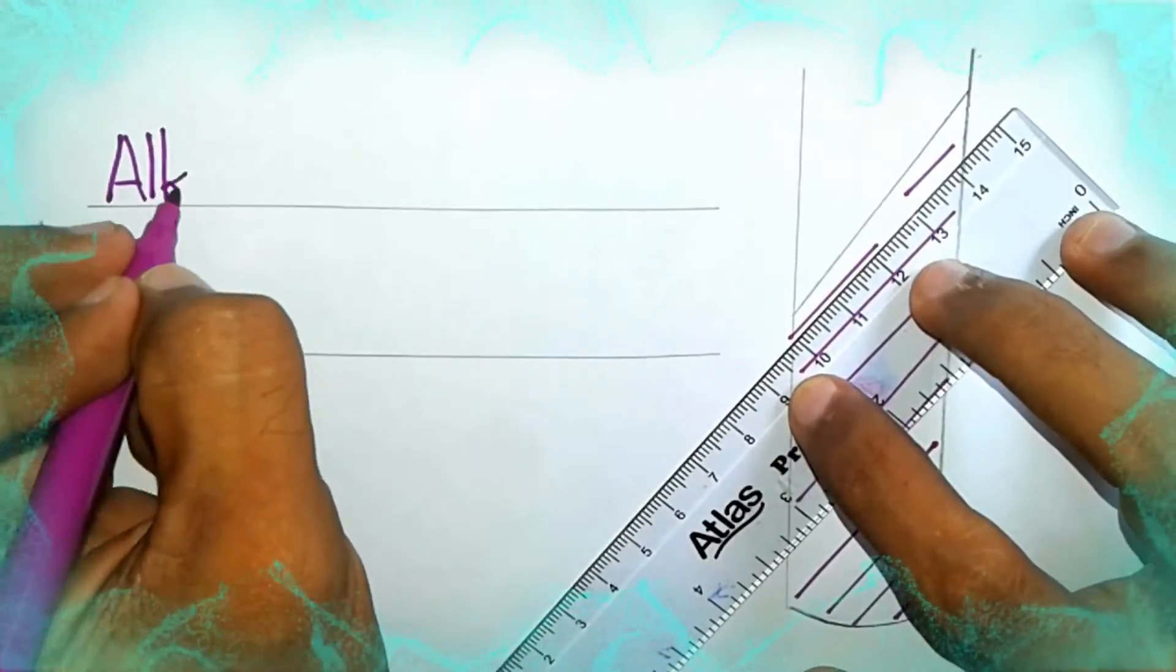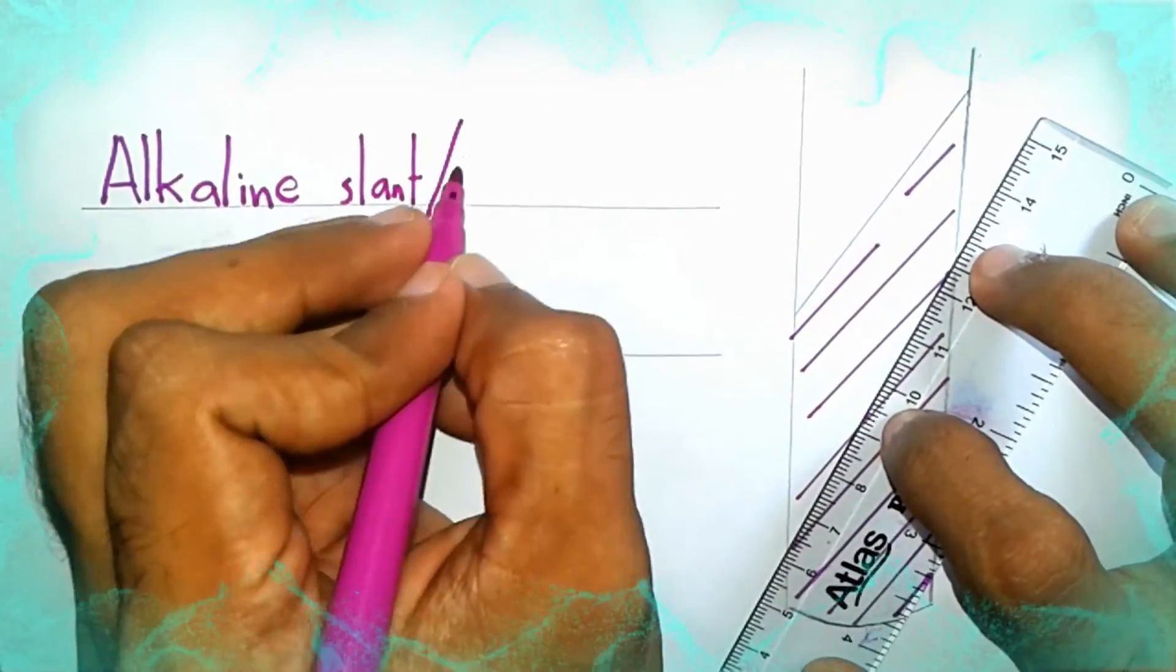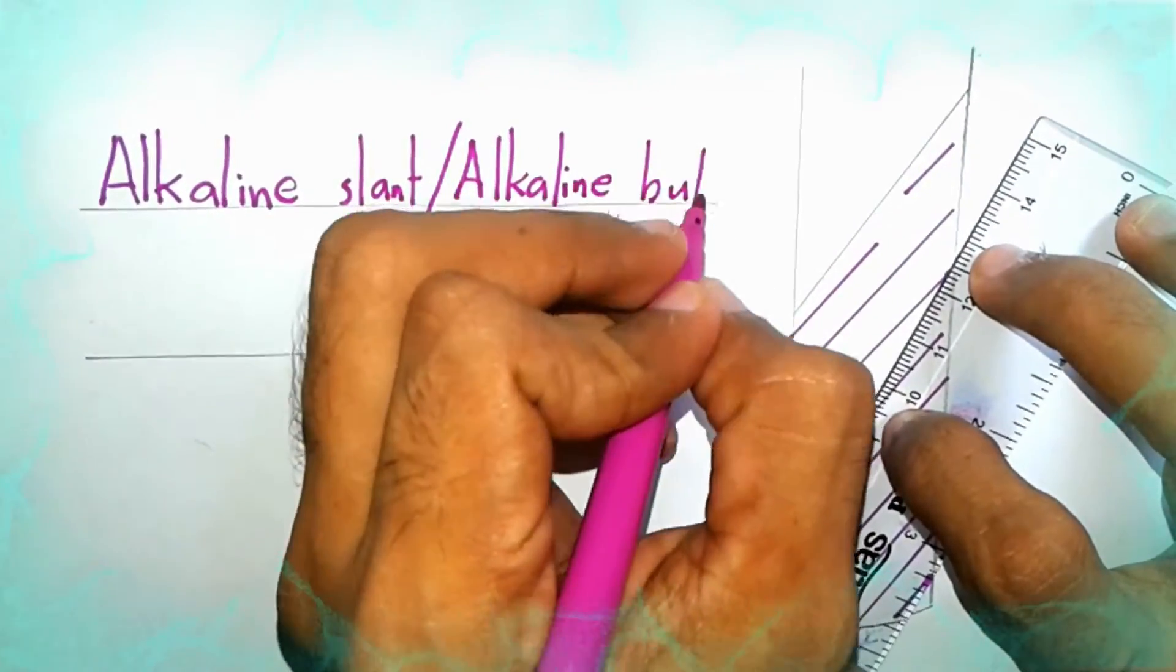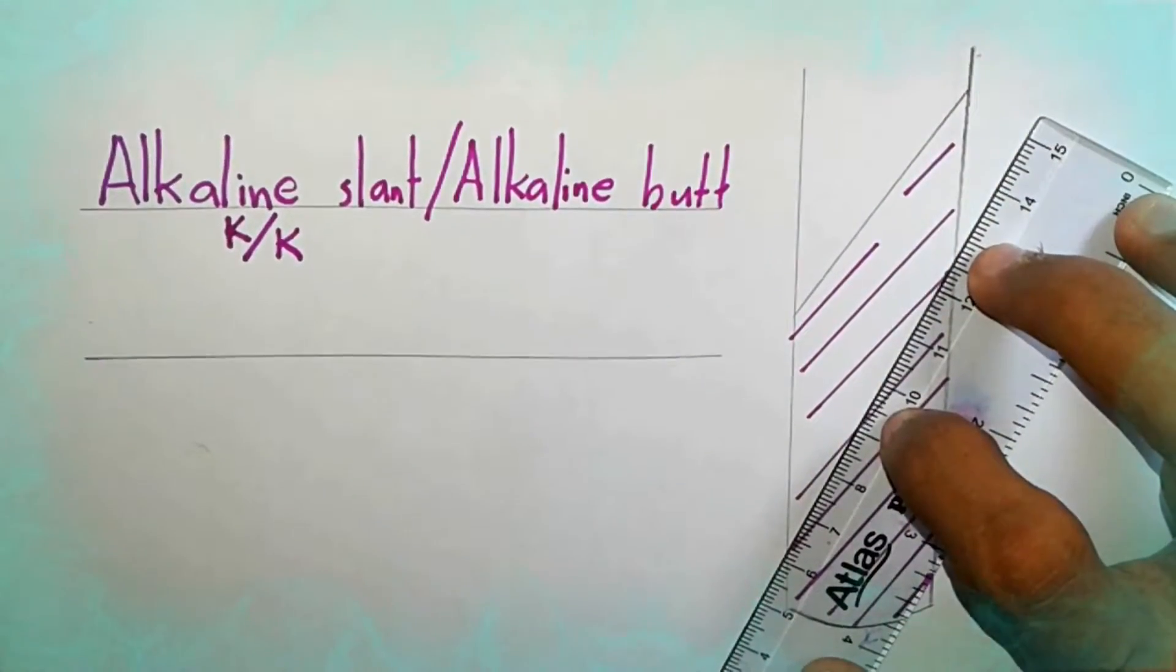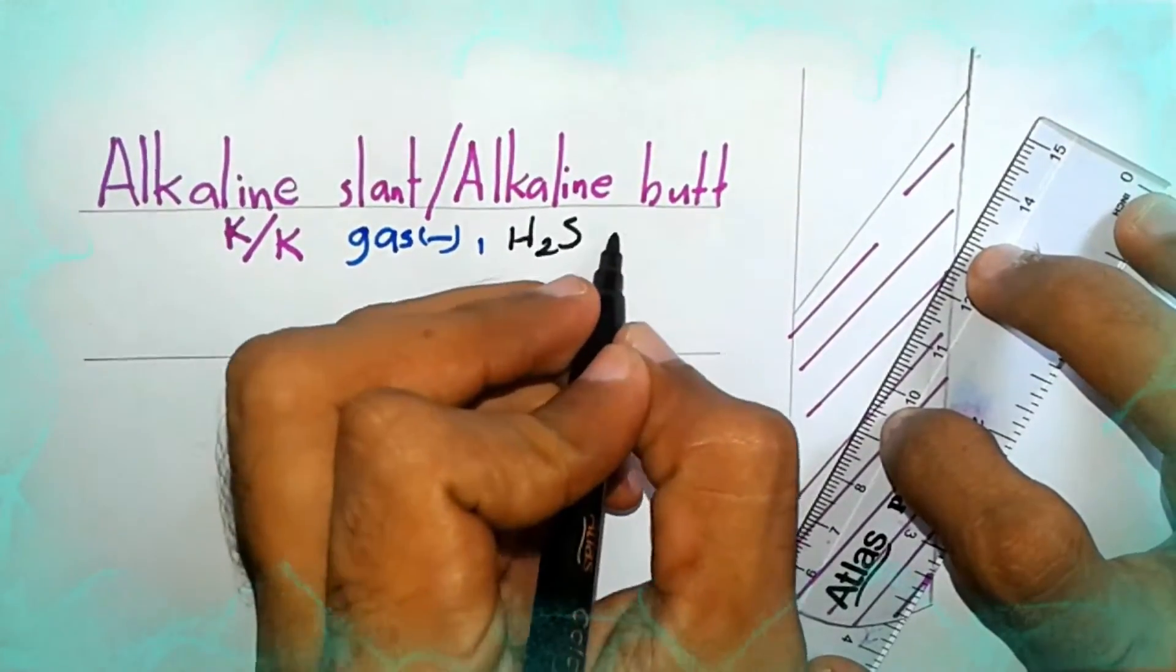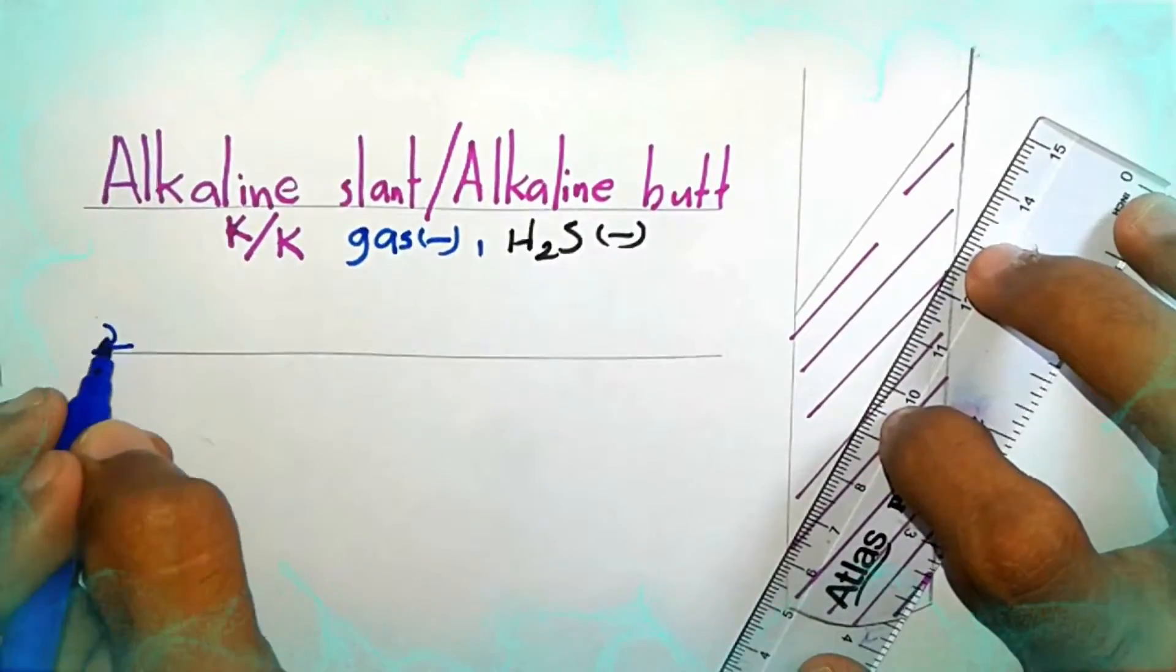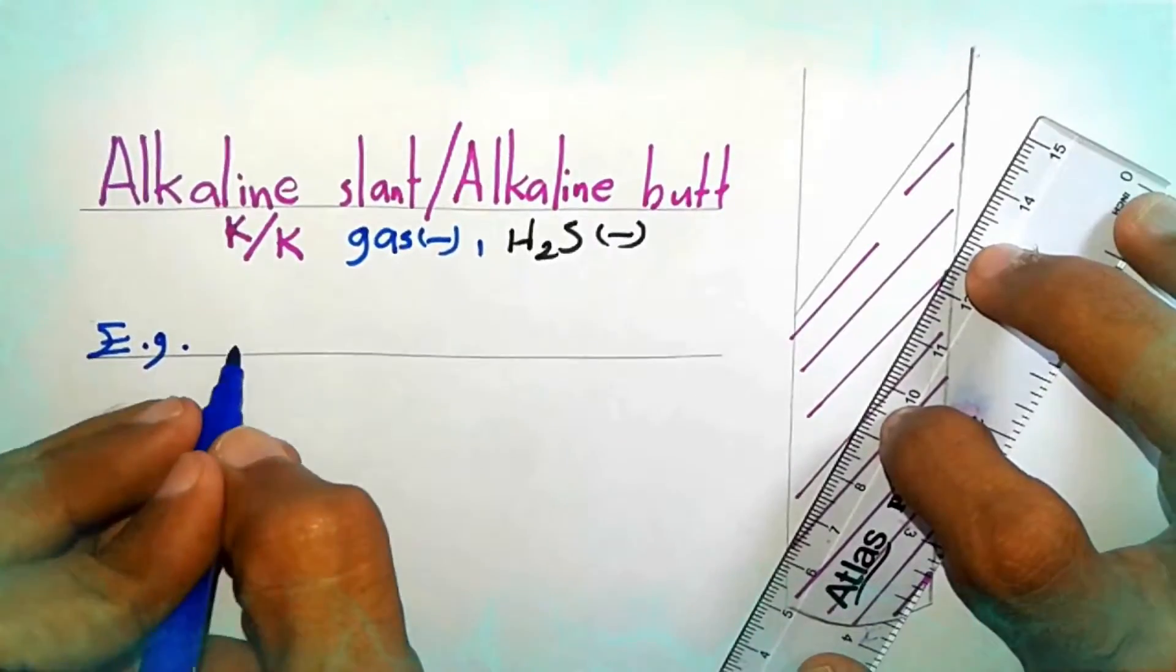Alkaline slant and Alkaline butt. Gas negative and H2S negative. Examples: Pseudomonas aeruginosa.